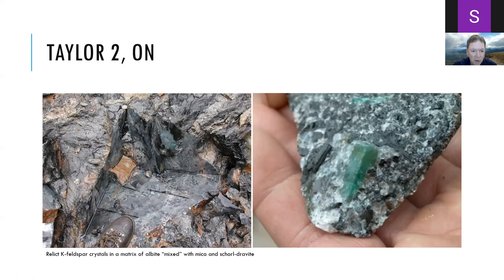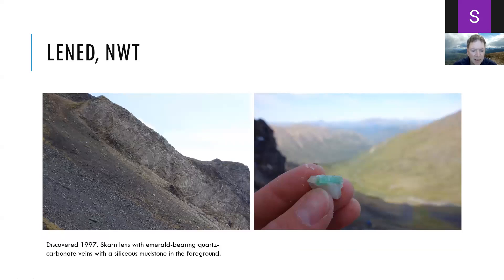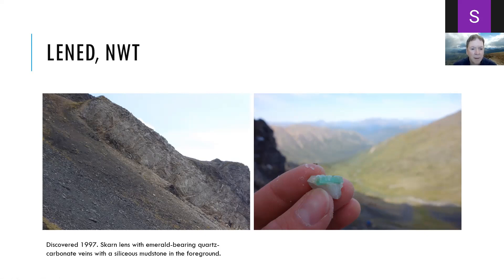In 1997, emerald was discovered at a locality called Linad in the Northwest Territories. These emeralds are vanadium-dominant — the green color comes mainly from vanadium — and they occur in quartz-calcite veins cutting a skarn limestone, with about 35 sub-parallel veins visible in the outcrop. Our research shows the beryllium is coming from a nearby granite, so this is again a magmatic type deposit, while the vanadium chromophore comes from a nearby black shale or mudstone with up to about 3,000 parts per million vanadium.